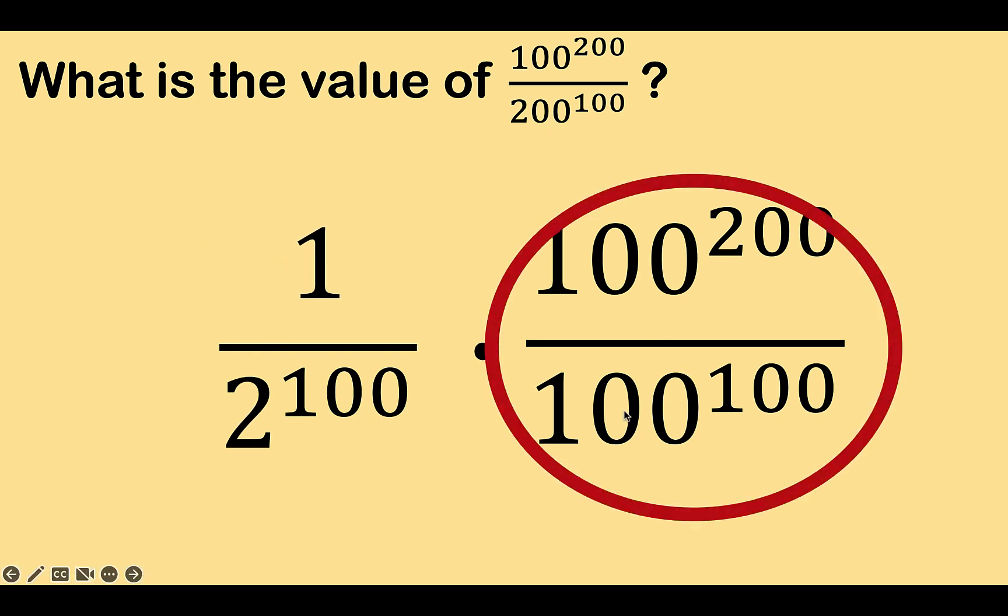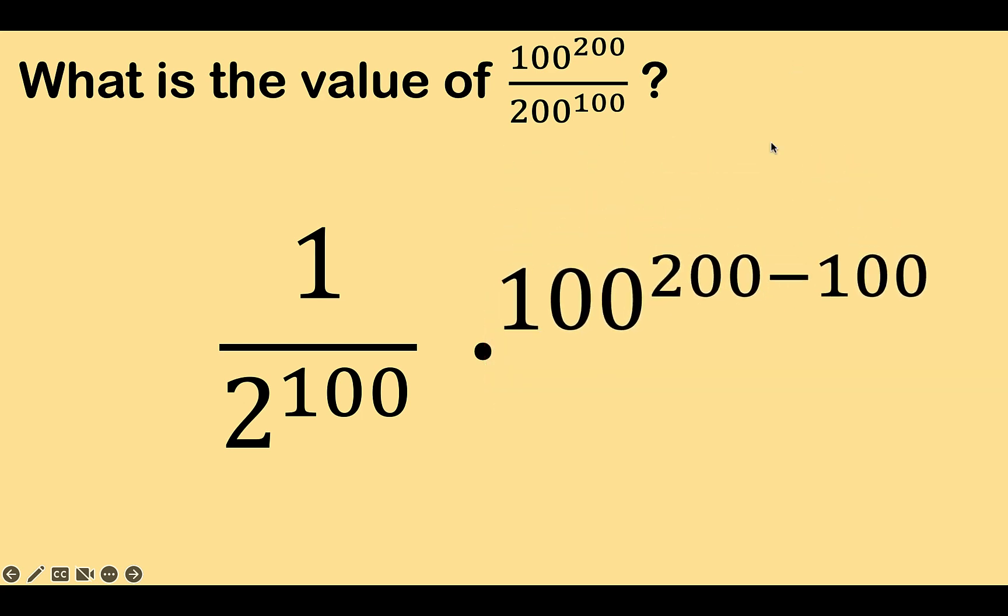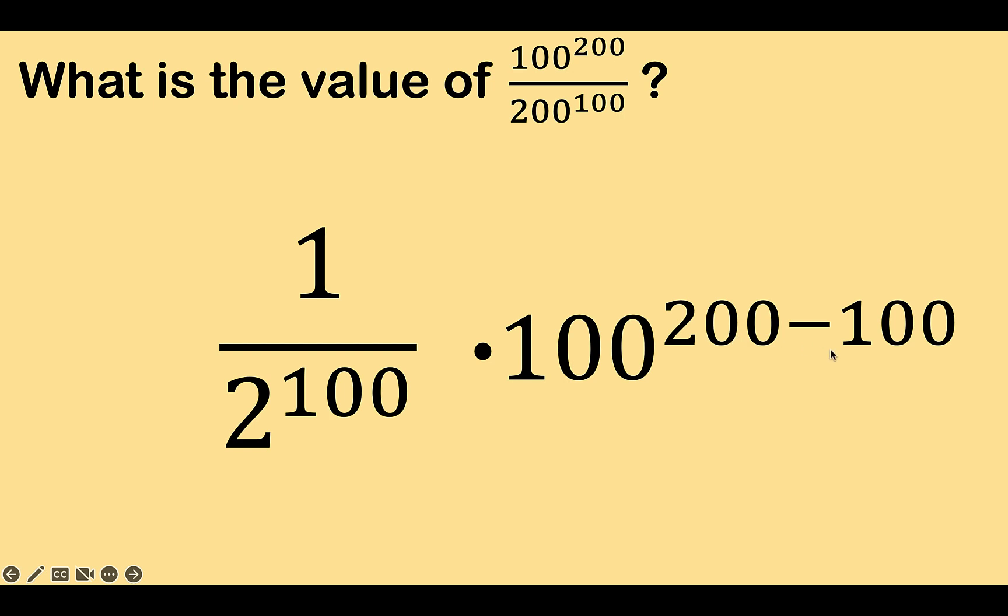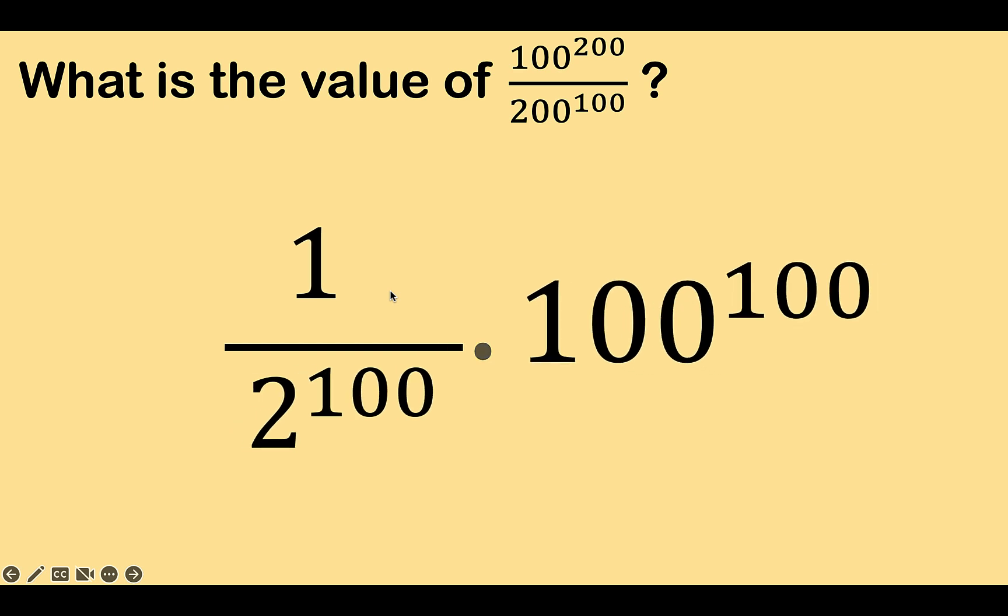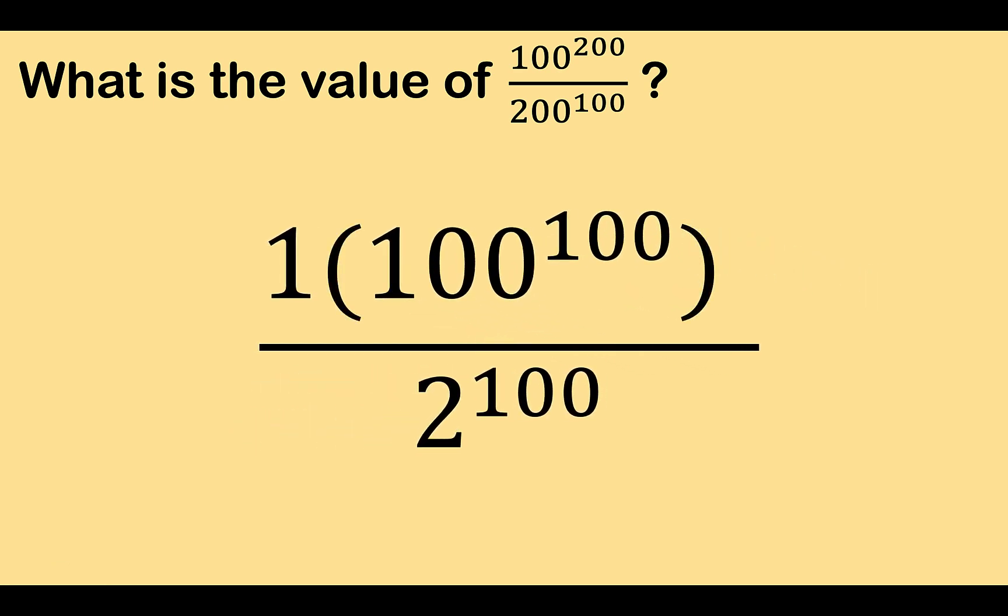Then look at this part. There's a common base 100 and the operation is division. So using the quotient rule of exponent, we can just copy the common base and subtract the exponents, 200 minus 100, and this is now what we got. Then simplifying 200 minus 100 is 100, so we have 100 raised to 100, and then multiply the numerators and multiply the denominators and simplify.